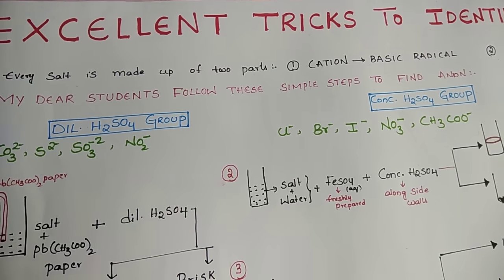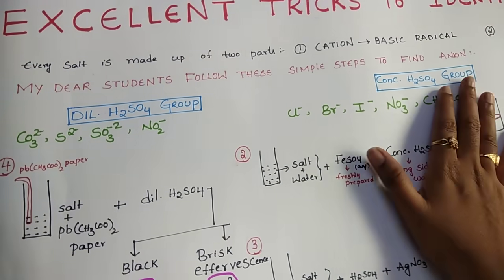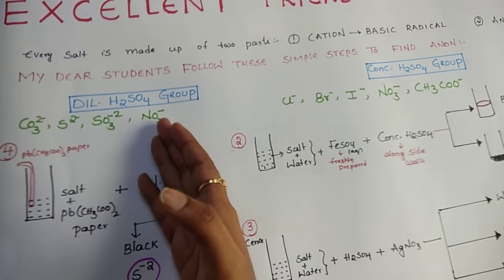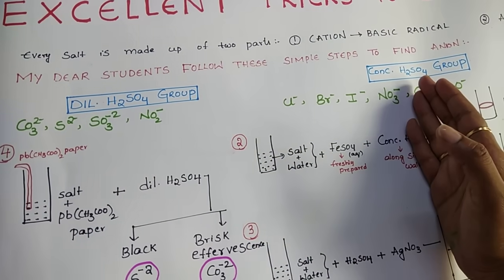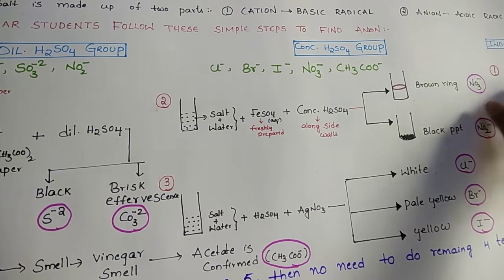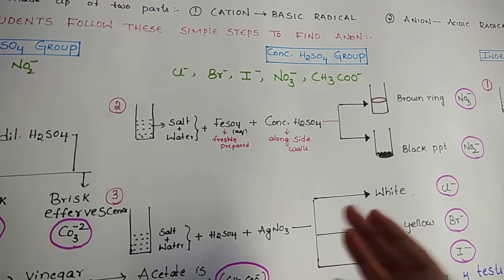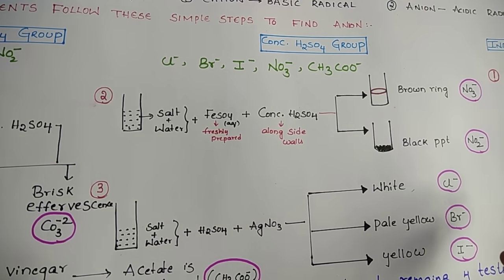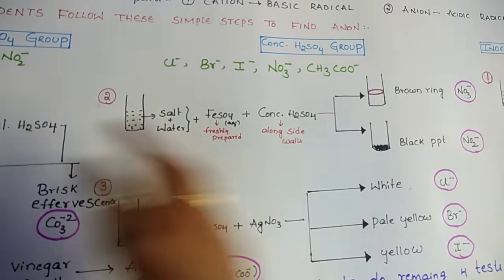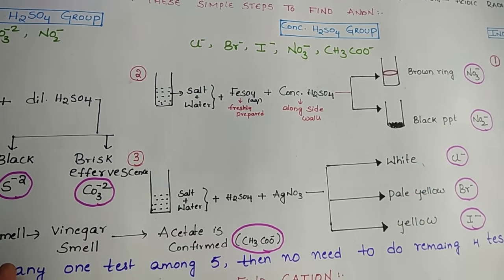Follow these easiest steps to find the anion. We can use dilute H₂SO₄, we can use concentrated H₂SO₄, and we have one independent group where we use barium chloride to detect the anions. Apart from this general procedure, these simple five tips will make you find the anion easily. Let us see the first one.